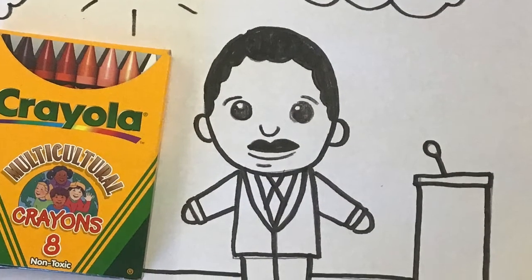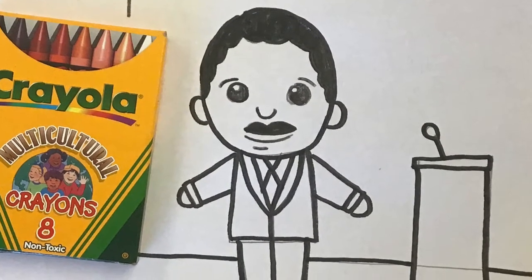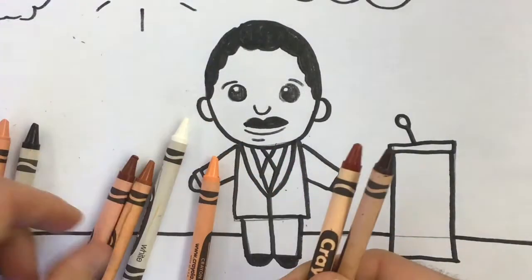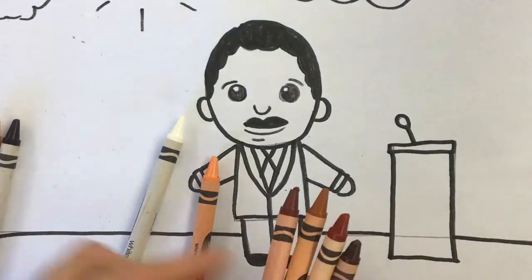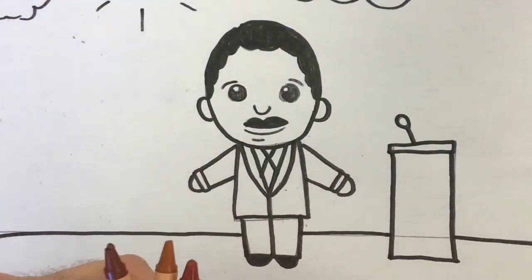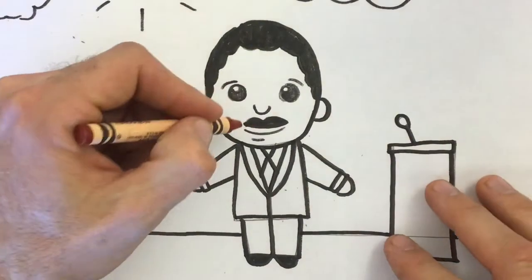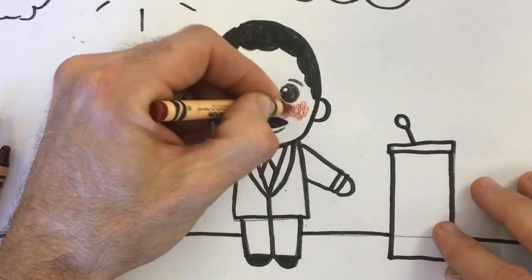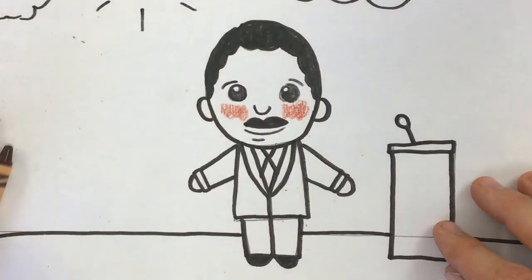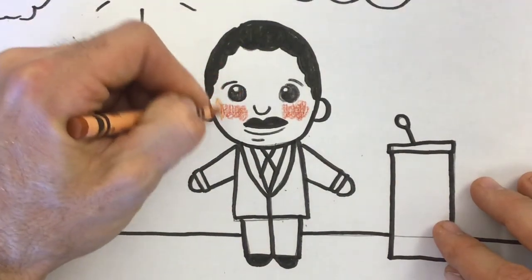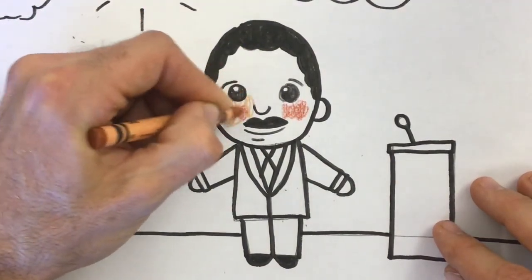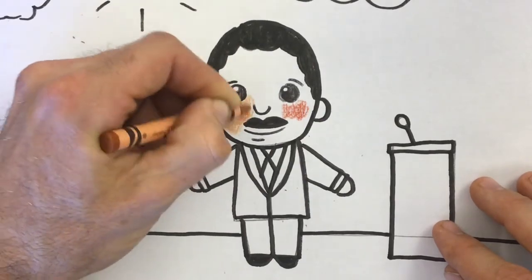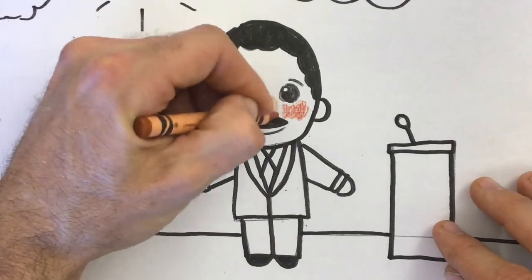All right. Now let's add some color. I'm going to choose my colors very wisely here. Because I want my picture, even though it's just a cartoon, I want it to look kind of like the real Dr. Martin Luther King. So his skin was shades of brown. And I'm going to use kind of a reddish brown for the cheeks. No matter who you are, you normally have at least a little bit of reddish color in your cheeks.